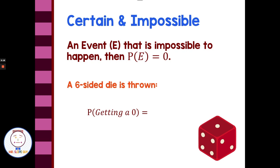Since the dice are numbered 1, 2, 3, 4, 5, 6, the probability of rolling a 0 is 0 because there are no sides that are 0. No matter what side is rolled, it is not going to be a 0. So there is a 0 probability — anything that's impossible, we say the probability is 0.